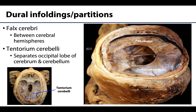There are four dural partitions. The falx cerebri, which you can see here, is the largest. It will be located in that longitudinal cerebral fissure between the cerebral hemispheres during life — the brain has obviously been removed in this dissection. The falx cerebri has a very distinct sickle shape and extends from the crista galli anteriorly all the way towards the internal occipital protuberance posteriorly. Both the superior sagittal sinus and the inferior sagittal sinus will be associated with the falx cerebri.